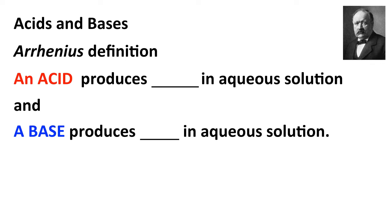When we deal with acids and bases, there are a number of definitions that we can use. Probably the most common definition of acids and bases is known as the Arrhenius definition. It's named after the Swedish scientist Svante Arrhenius, who was awarded the 1903 Nobel Prize for Chemistry. According to the Arrhenius definition, an acid is a substance that produces hydronium ion in aqueous solution.